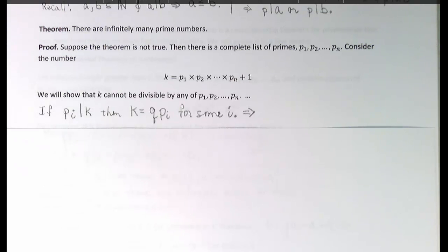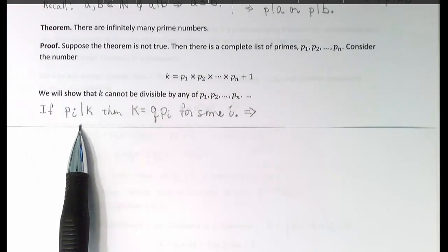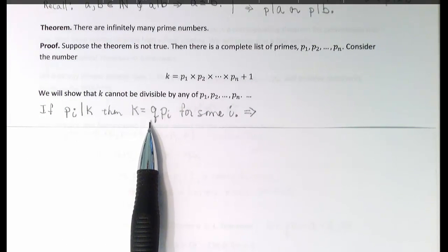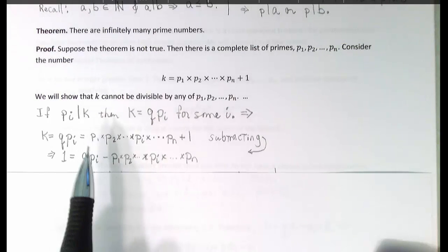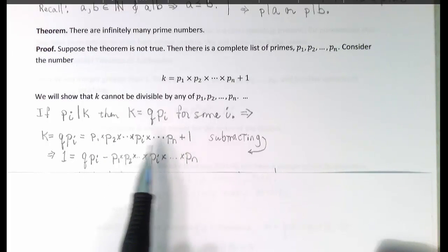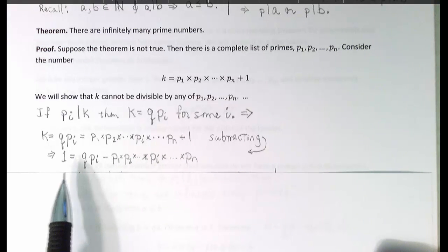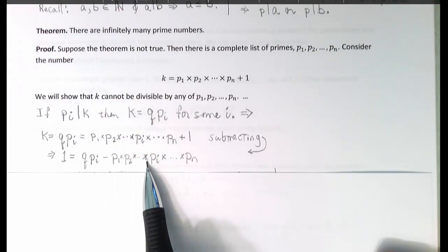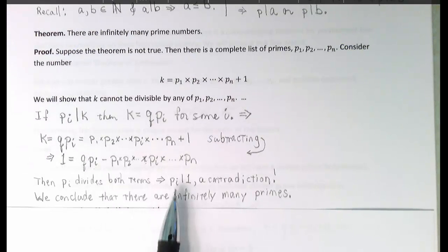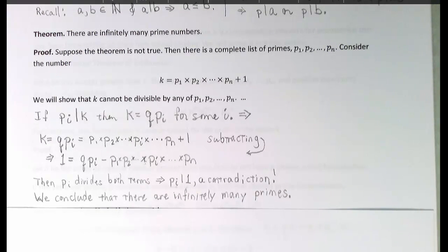If it were the case that some pᵢ divided k, then k could be written in this way: It's some quotient times this prime pᵢ. Then that would tell us that since k is the product of all of the primes plus 1, we could subtract this product of the pᵢ from both sides, obtaining an expression for 1. 1 is q times pᵢ minus the product of our assumed list of all of the primes. But then notice, both this term and this term are divisible by pᵢ. We could factor that out, therefore showing that pᵢ divides 1. But that's a contradiction. No prime can divide 1, because if it did, then the prime would be less than or equal to 1. However, all primes are greater than 1. We conclude then that there are infinitely many primes.